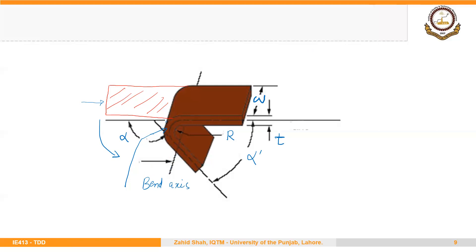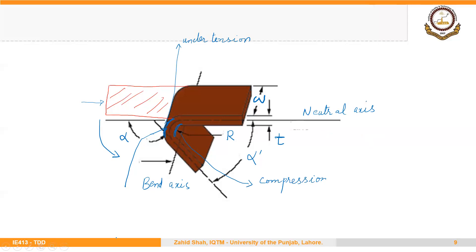The outer fibers are under tension, and the inner fibers where the inner radius is being made are under compression. There is an axis or line where the forces are neither compressive nor tensile — that is called the neutral bending line or neutral axis. The most important factors in bending are the bend angle, the thickness of the starting blank, and the bend radius.